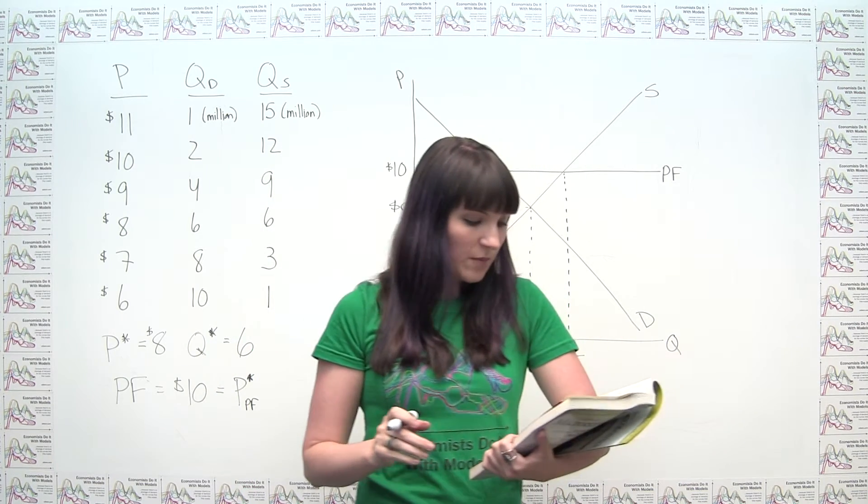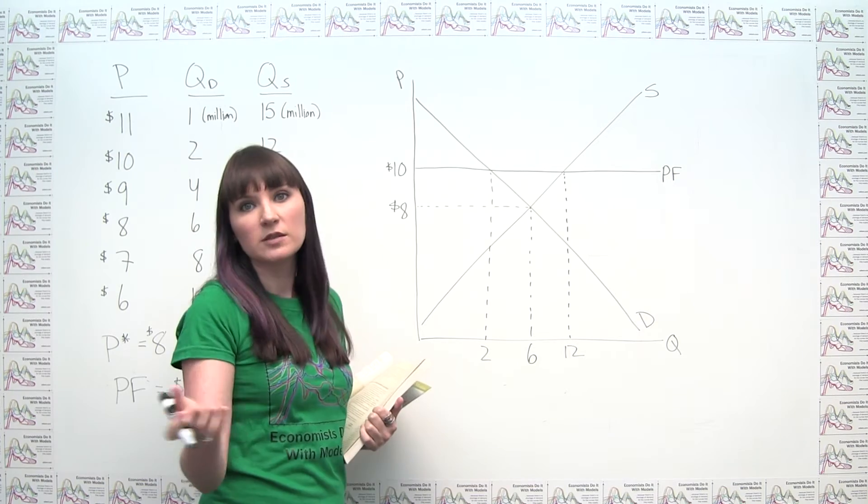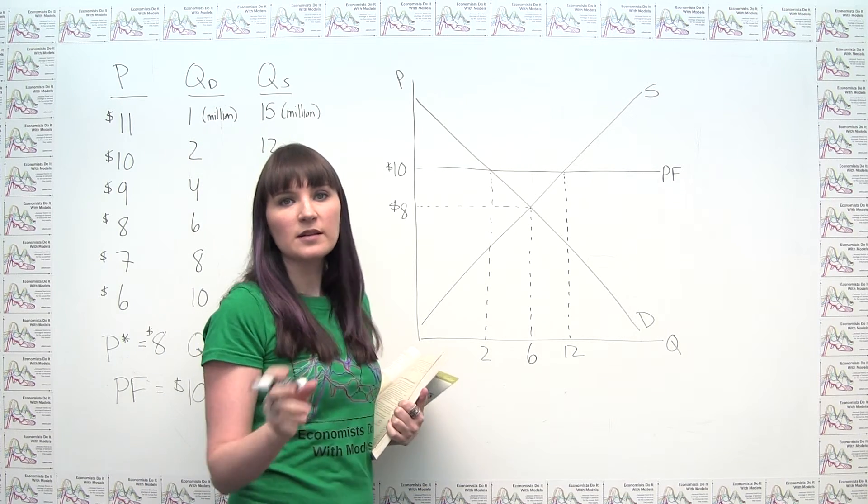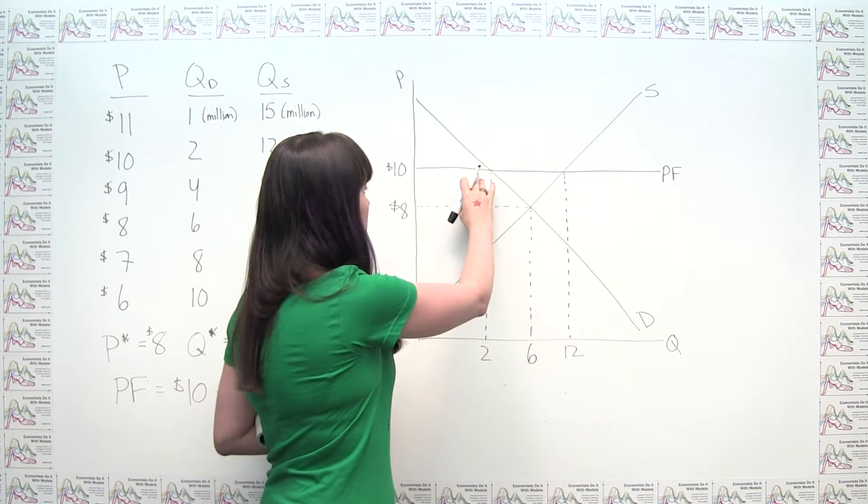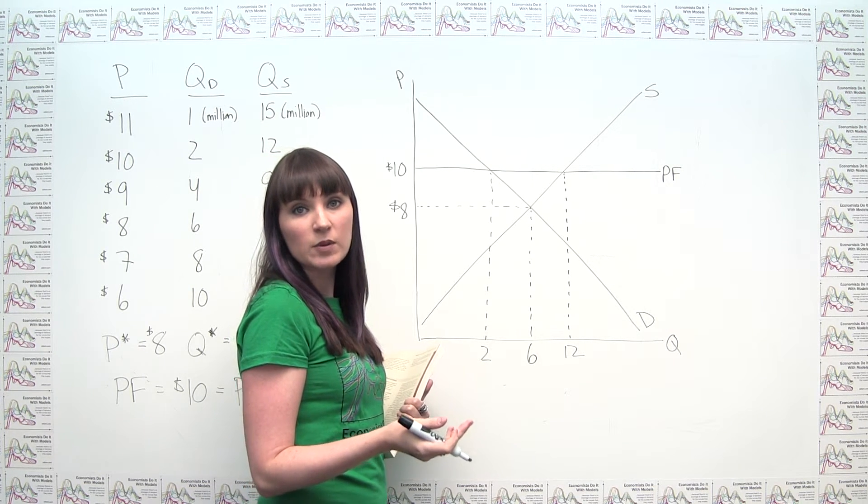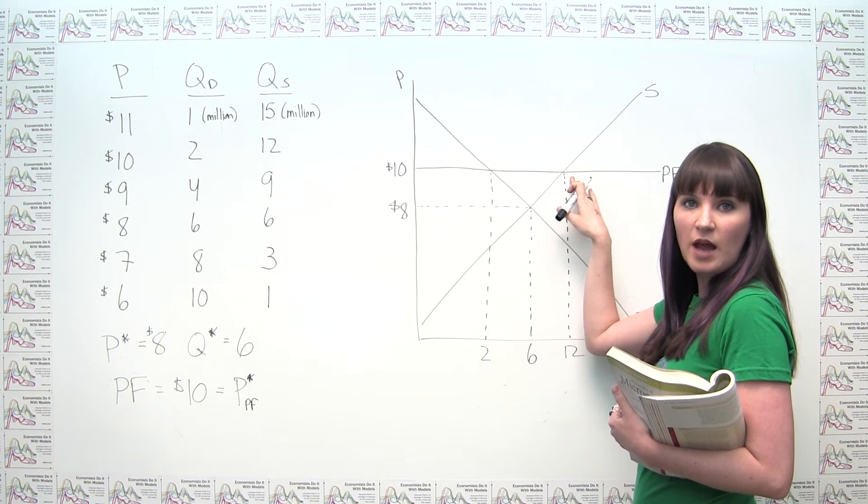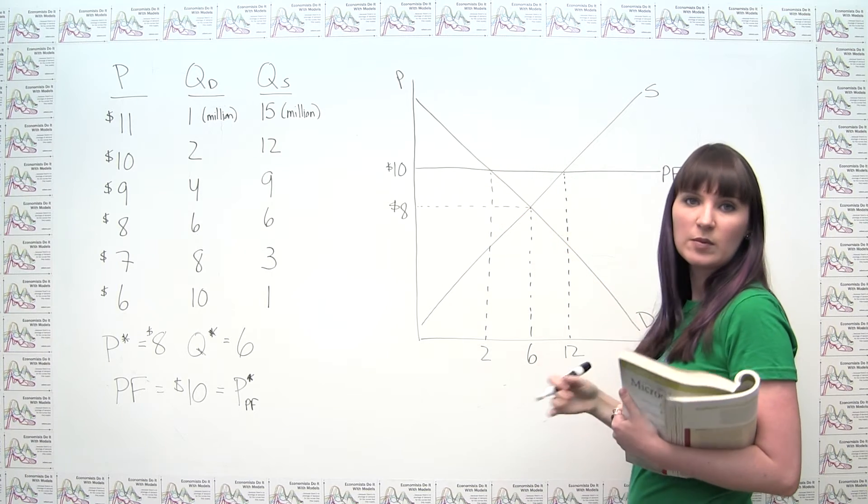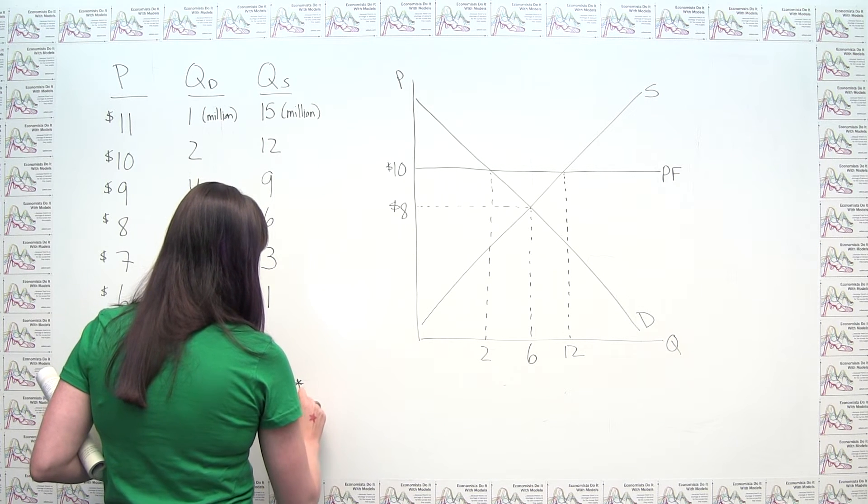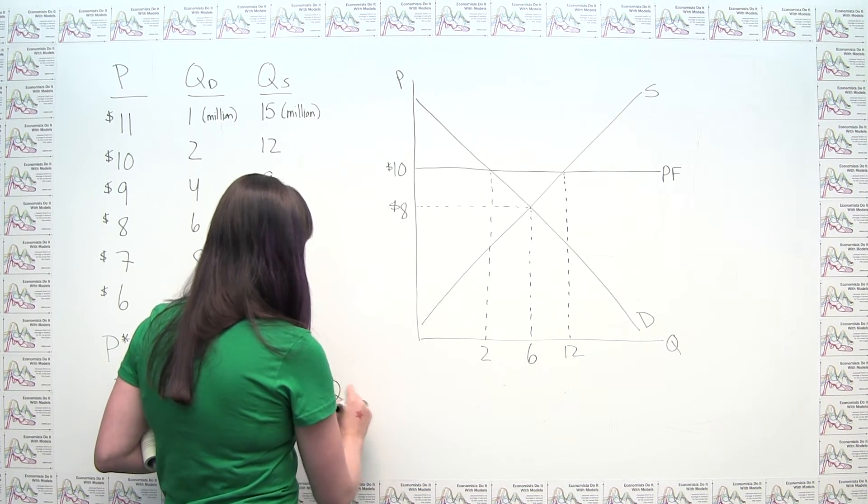So we can also think about how many Frisbees are sold. Well, we have at this price, consumers wanting to buy 2 million Frisbees. And producers wanting to sell at this price, 12 million. But it takes both a buyer and a seller to actually make a transaction happen. So the number of buyers is going to be the limiting factor here. And this 2 million is actually going to be our equilibrium quantity with the price floor. So it would be really nice. Suppliers would really want to produce and sell 12 million at this price. Unfortunately, they're not able to do so because they're limited by the number of customers that actually show up at their door. So we could say here that our Q star with the price floor, or our equilibrium number of transactions, our steady state number of transactions, when we have this price floor in place, is in fact 2 million.